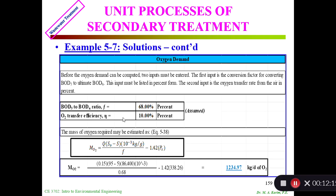Before the oxygen demand can be computed, two inputs must be entered. The first input is the conversion factor of BOD5 to BOD ultimate. The second input is the transfer rate of air, percent of oxygen transferred to air. I consider BOD5 0.68 and the transfer efficiency is 10%. That means 10% of oxygen from the air would be transferred to the water as dissolved oxygen, because microorganisms cannot take any oxygen that is not dissolved. Mass of oxygen required may be estimated using equation 5-38. I get 1234.97 kg/day of oxygen.